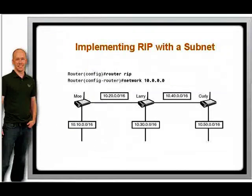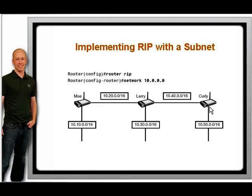Remember to enter only your directly connected networks. Curly, for example, should not enter 192.168.10.0/24 in his configuration because that network is not directly connected to his router. Also, you should enter classful networks only. A classful network is a major class A, B, or C network with the default mask of slash 8, slash 16, or slash 24.